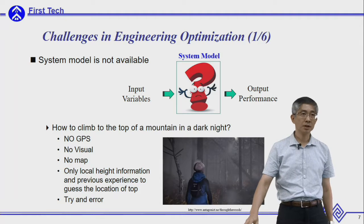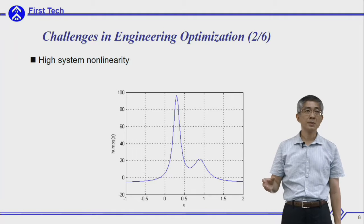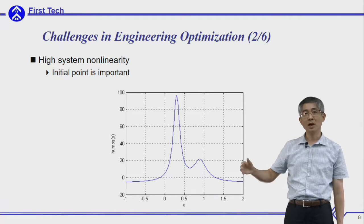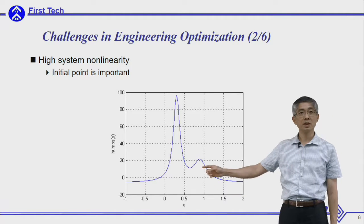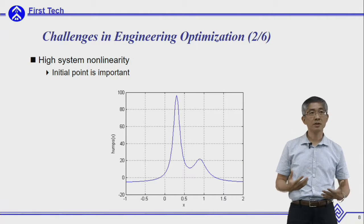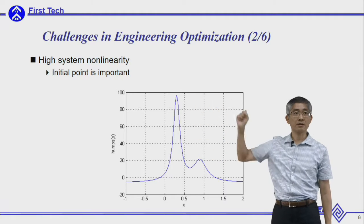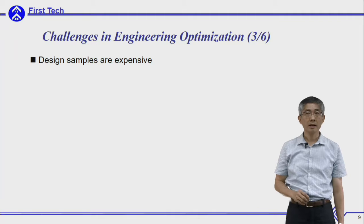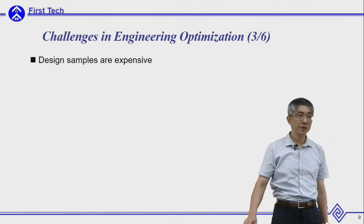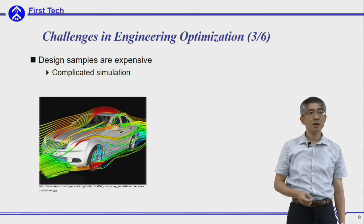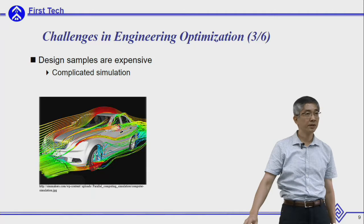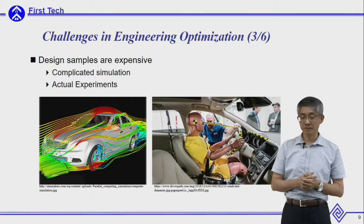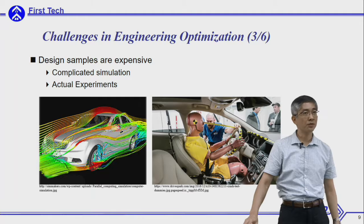You can only rely on surrounding information and previous experience, using trial and error to find the direction to the top of the mountain. The system could be highly nonlinear, so the initial point becomes very important. If you start from the right side, you might reach a local optimum, thinking you're at the top, while the actual optimum is elsewhere. Also, experiments can be very expensive — such as complicated simulations or car crash tests — so you want to minimize the number of samples.